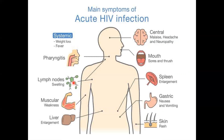What are the symptoms of HIV infection? For a few months to a few years there won't be any symptoms, but slowly weight loss and fever will start. The person may have pharyngitis — infection of the pharynx — swollen lymph nodes, muscle weakness, liver enlargement, rashes on skin, nausea and vomiting, enlarged spleen, mouth sores, and even the brain will be affected with continuous headaches.